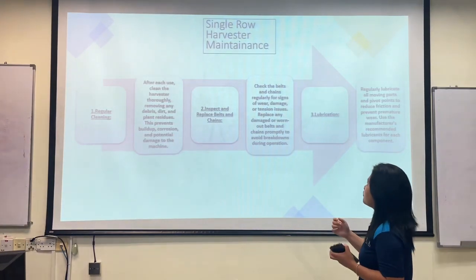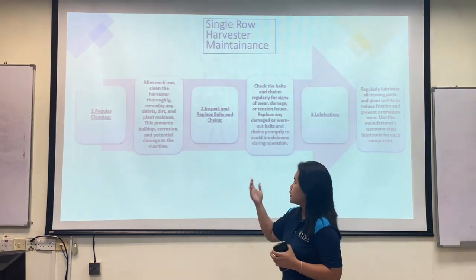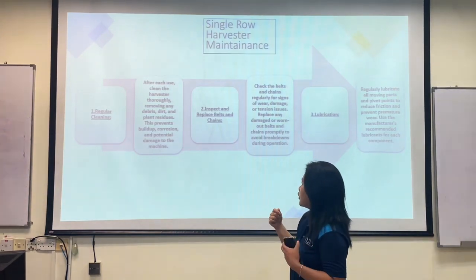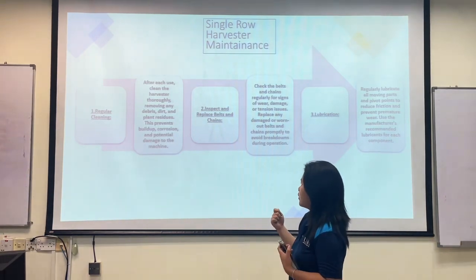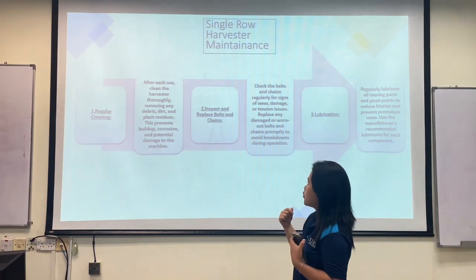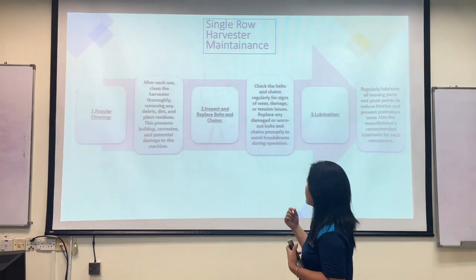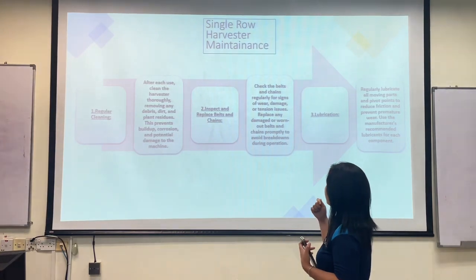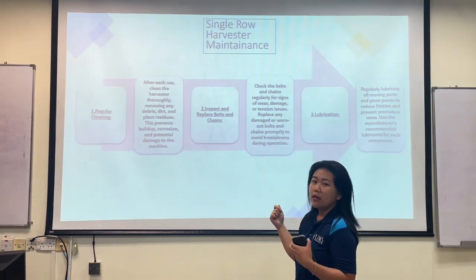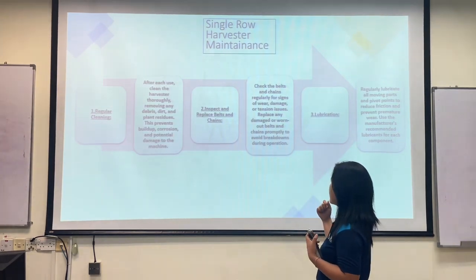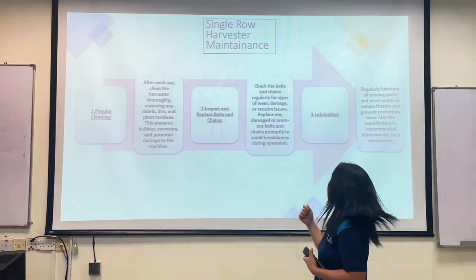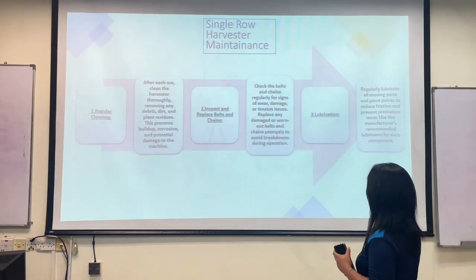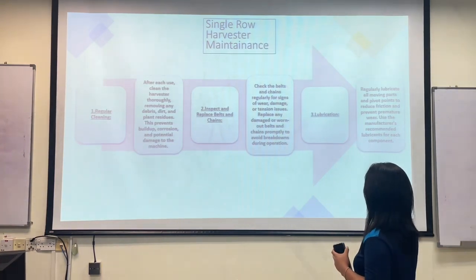This is the maintenance of the single row harvester. First, regular cleaning: after each use, clean the harvester thoroughly, removing any debris, dirt, and plant residues. This prevents build-up, corrosion, and potential damage to the machine. Second, inspect and replace belts and chains: check the belts and chains regularly for signs of wear, damage, or tension issues. Replace any damaged or worn-out belts and chains promptly to avoid breakdowns during operation. Lastly, lubrication: regularly lubricate all moving parts and pivot points to reduce friction and prevent premature wear.